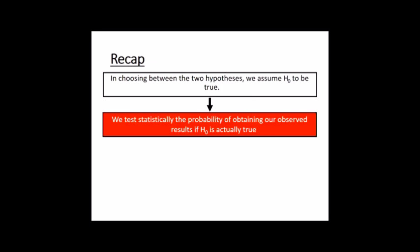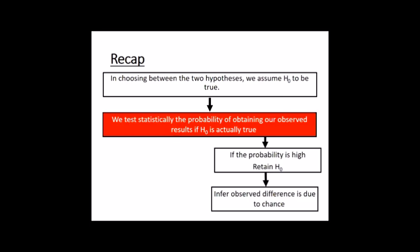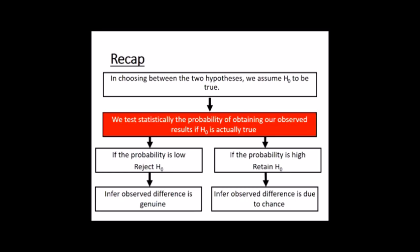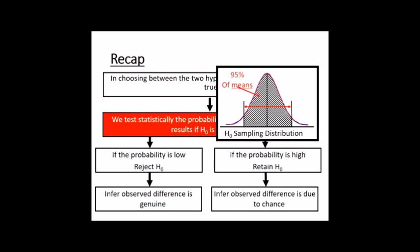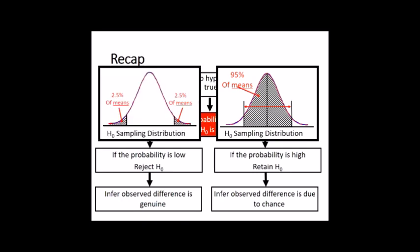If the probability is high that our sample comes from the null population, we retain the null — any difference is just due to random variability, sampling chance. If the probability is low and we're out in those tails, we reject the null and say there is a genuine difference. Under the null we'd fall in the 95% and retain; otherwise we fall on those tails and reject the null.